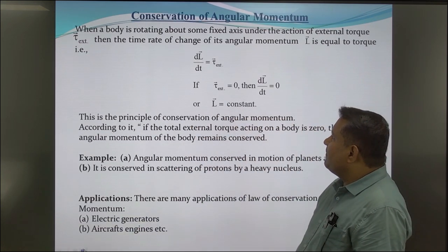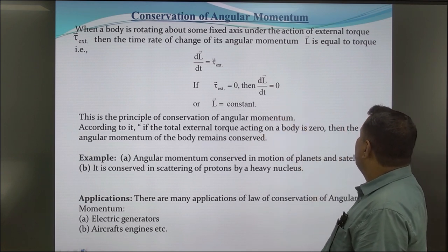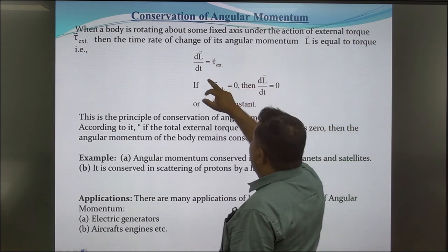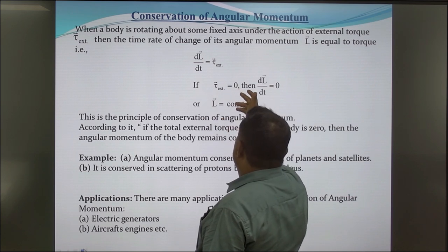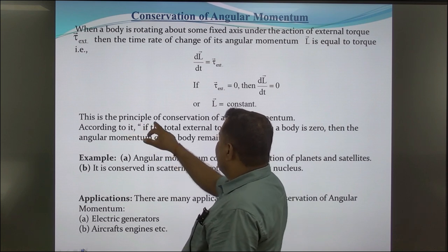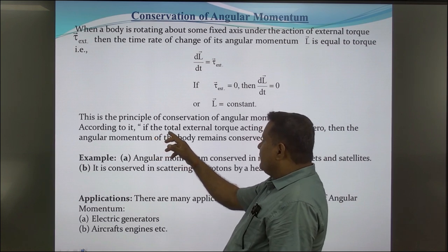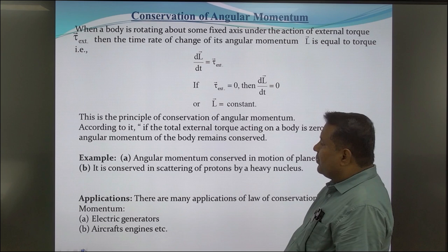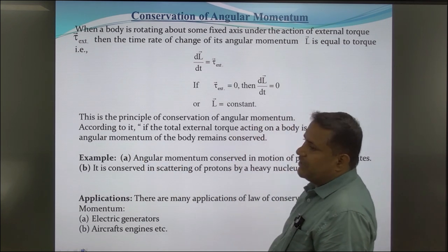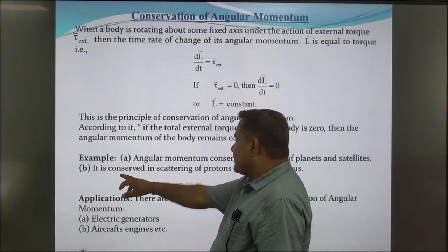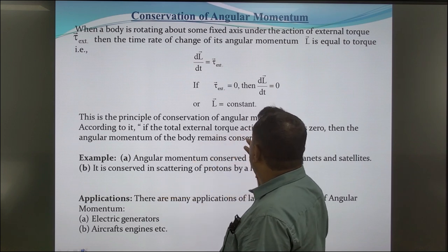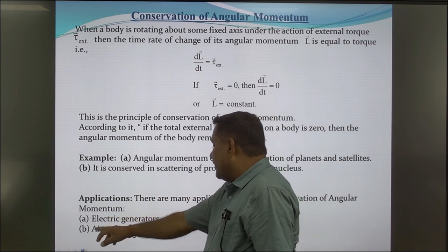Conservation of angular momentum. When a body is rotating about some fixed axis under the action of external torque τ, the time rate of change of its angular momentum L is equal to the torque: dL/dt = τ_external. If the external torque is zero, then dL/dt = 0, which means L = constant. This is the principle of conservation of angular momentum. According to it, if the total external torque acting on the body is zero, then the angular momentum of the body remains conserved. For example, angular momentum is conserved in the motion of planets and satellites, and in the scattering of protons by a heavy nucleus. Applications of the law of conservation of angular momentum include the electric generator and aircraft engines.